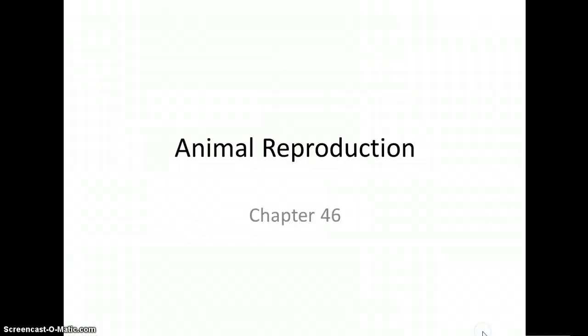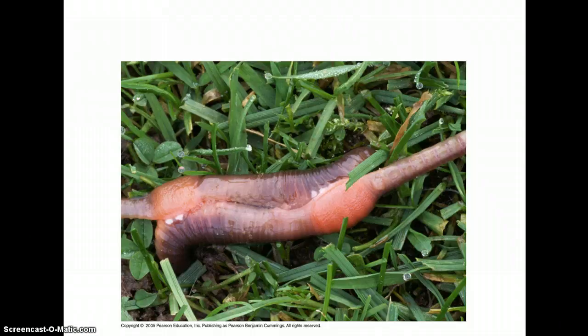Let's go through chapter 46, focusing on animal reproduction. Reproduction is a big deal for life — it's one of the characteristics of living things, the ability to reproduce more of your kind.